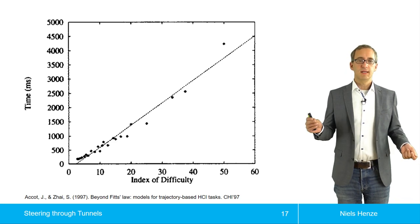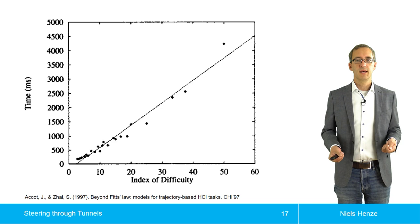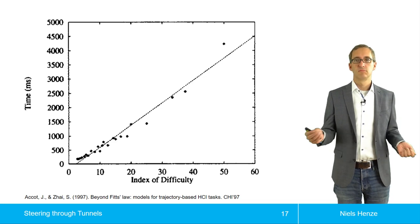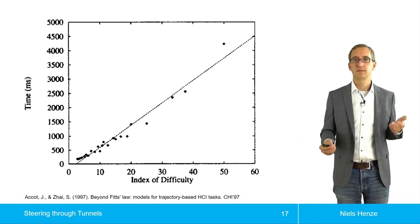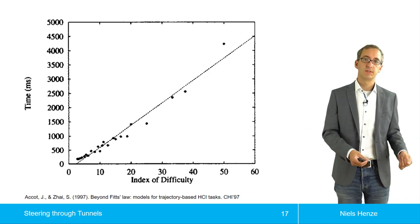So if you look at empirical data, and this is an example from work by Accot and Zhai, they had different index of difficulties and different movement times. They fitted a line through it. And then just as for Fitts' law, we can determine the device-specific constants.